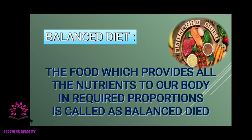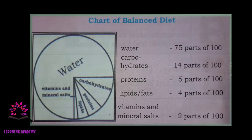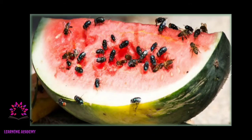Besides food, you should drink four to five glasses of water daily. Looking at the chart of a balanced diet: water makes up 75% of what you should consume daily. Carbohydrates make up 14%, proteins 5%, lipids and fats only 4% because they are energy-giving foods, and vitamins and mineral salts only 2%.